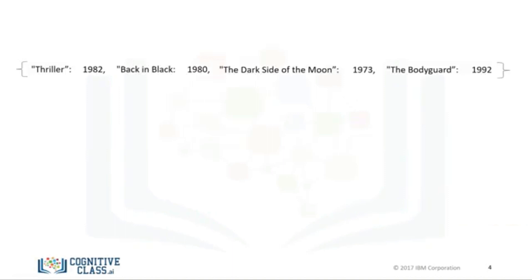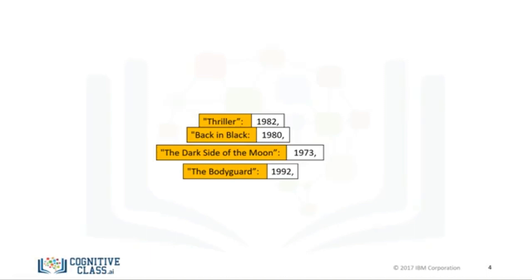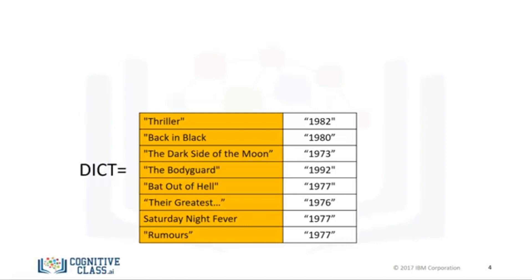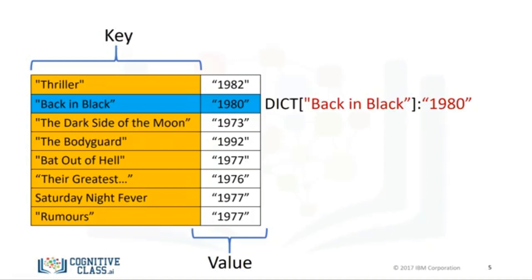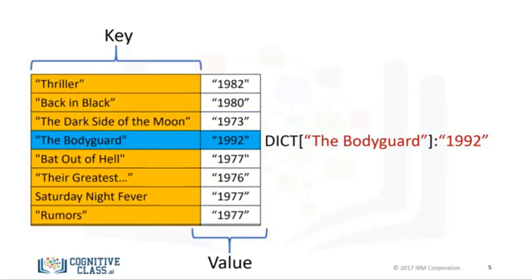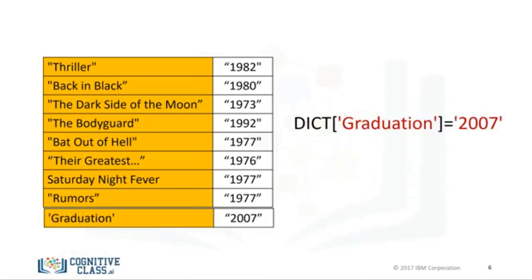Consider the following example of a dictionary. The album title is the key, and the value is the release data. It is helpful to use a table to visualize a dictionary where the first column represents the keys and the second column represents the values. We can add a few more examples to the dictionary. We can also assign the dictionary to a variable. The key is used to look at the value using square brackets. Using the key back in black, this returns the value of 1980. The key the dark side of the moon gives us the value of 1973. We can add a new entry to the dictionary — this will add the value 2007 with a new key called graduation. We can delete an entry, which gets rid of the key thriller and its value.